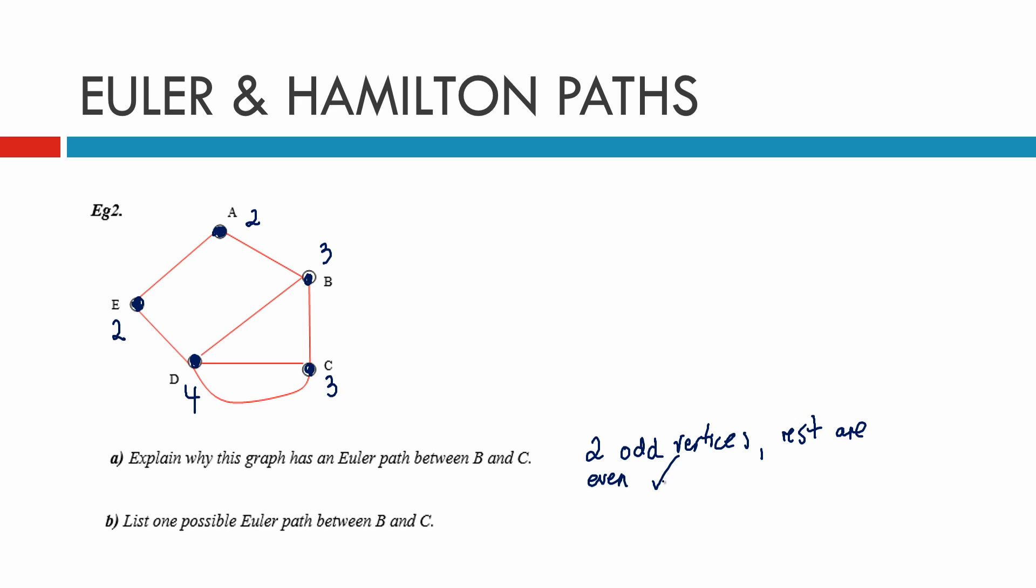Then it says list one possible Euler path between B and C. We'll start at B because we have to. We can go to D, then D to E, E to A, A to B, B to C, C to D, and D to C. So there's one path between B and C.